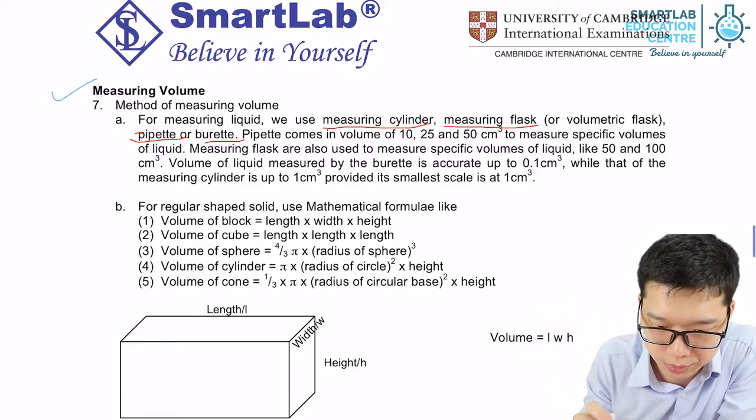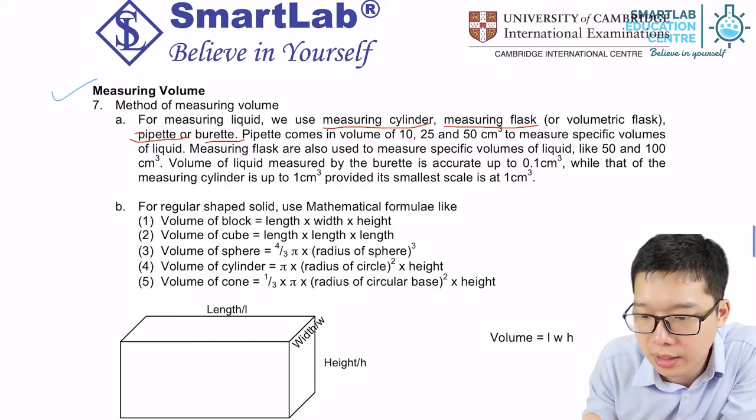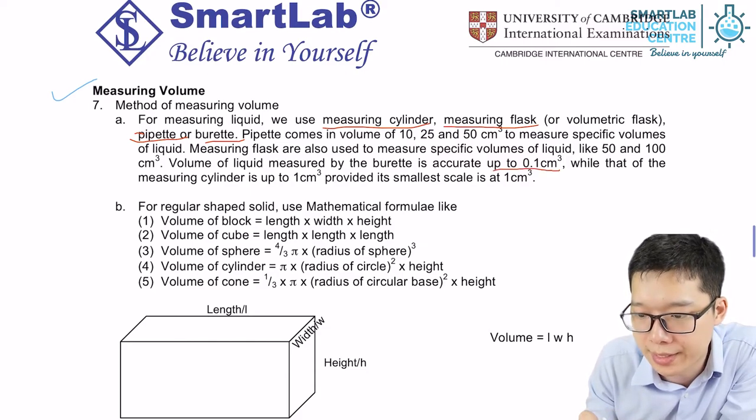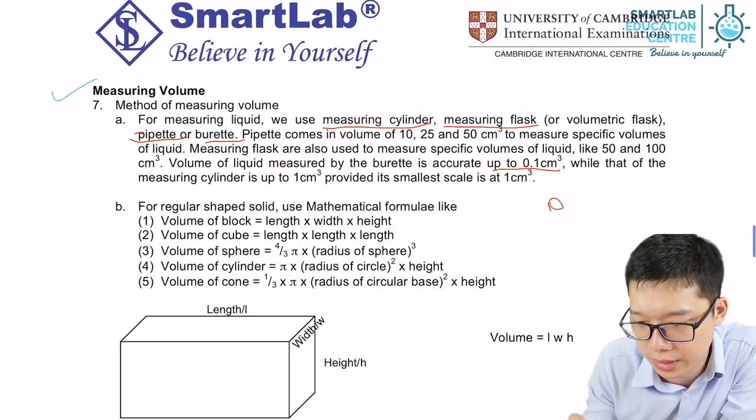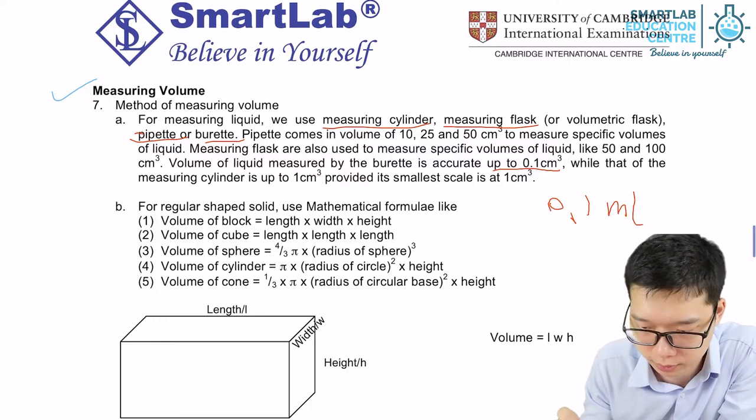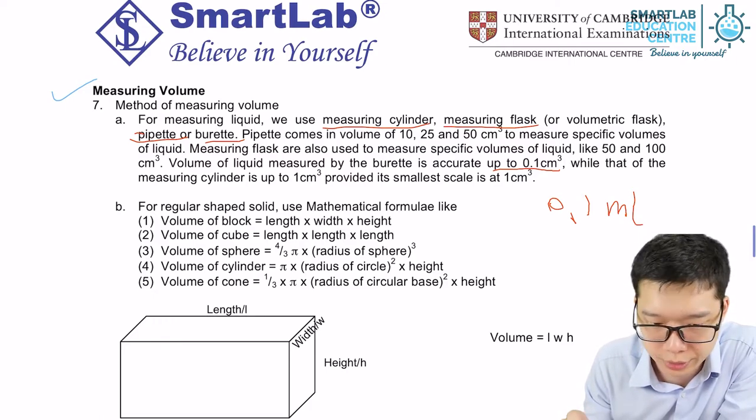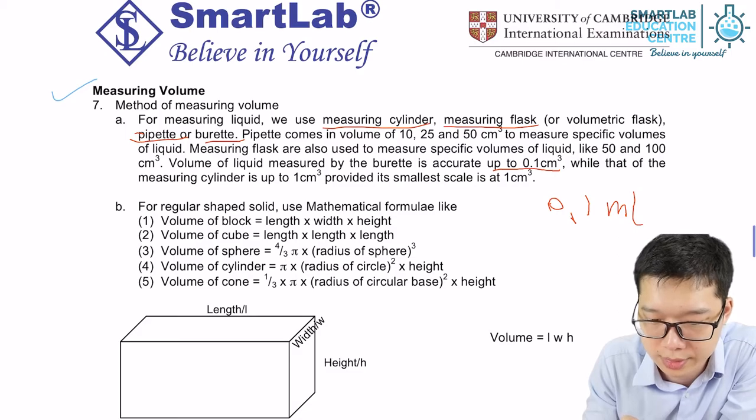Okay, so the volume can be measured up to 0.1 cm³, which is equivalent to 0.1 ml as well. The measuring tube cylinder is up to 1 cm³.